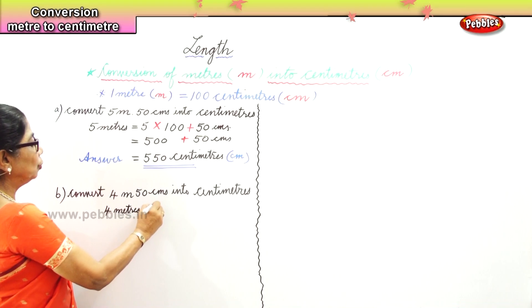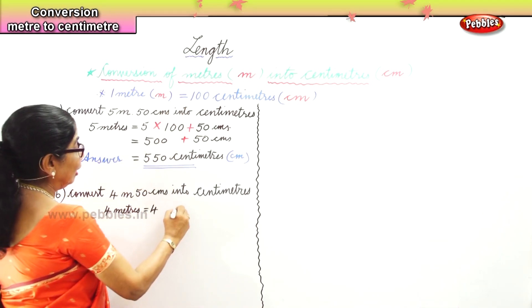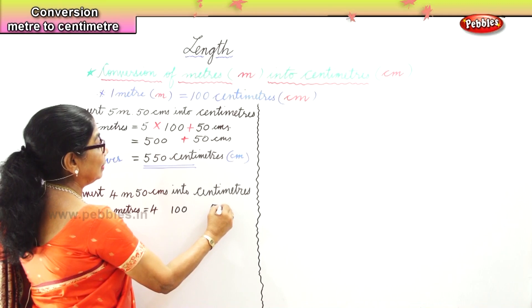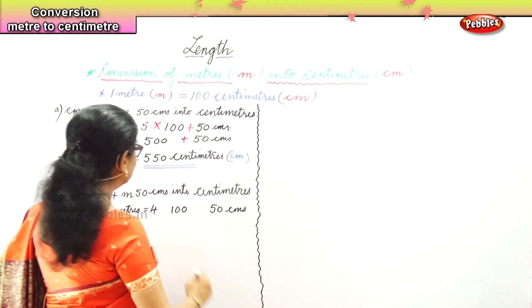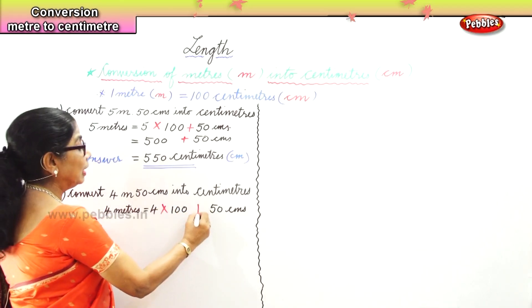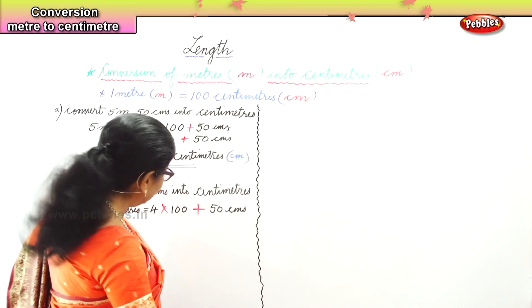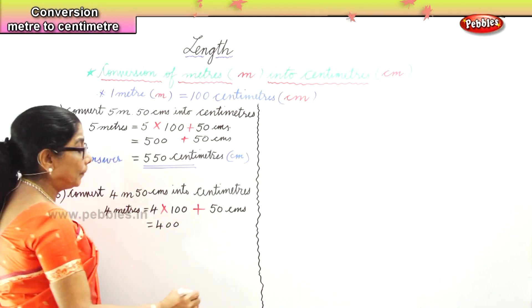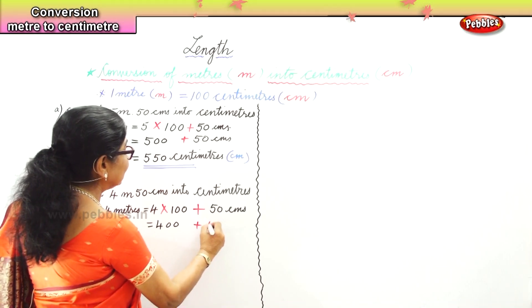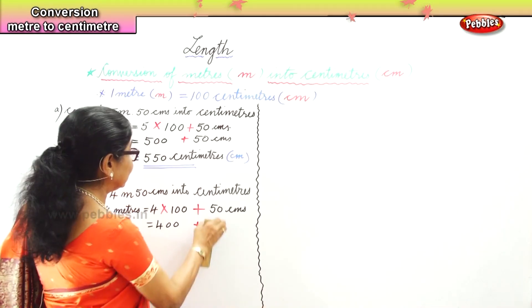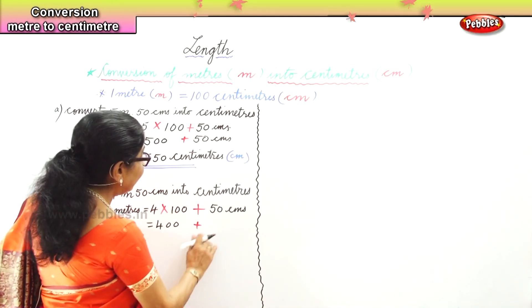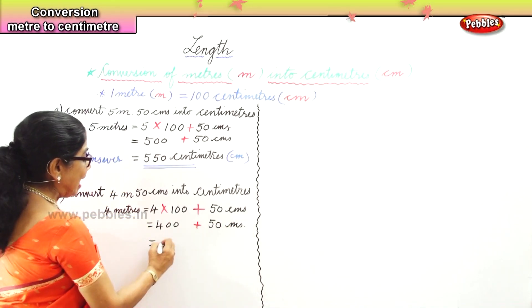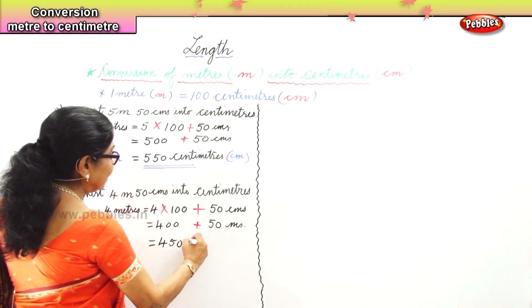4 meters is equal to 4 into 100, plus 50 centimeters. 4 into 100 gives you 400, plus 50 centimeters will give us the answer. So 4 into 100 is 400, plus 50 centimeters equals 450 centimeters.